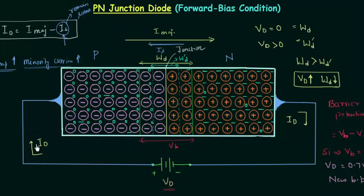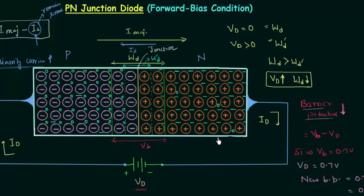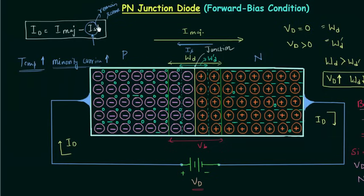To summarize forward bias condition: the positive terminal of the battery is connected to the P side and the negative terminal to the N side. The positive terminal repels holes towards the depletion region and the negative terminal repels electrons towards the depletion region. Recombination of immobile ions and mobile charge carriers reduces the width of the depletion layer and the barrier potential. Once the barrier potential reaches zero, a flood of electrons passes through the junction and current rises exponentially. The reverse saturation current remains the same because minority charge carriers depend only on temperature. These points will be helpful when drawing the VI characteristics of the PN junction diode.